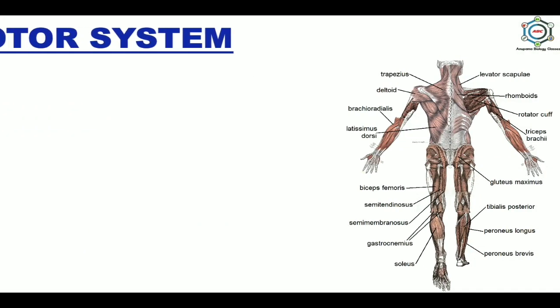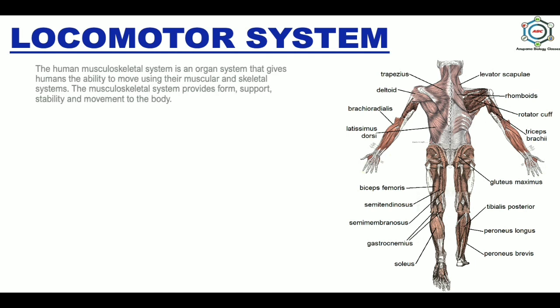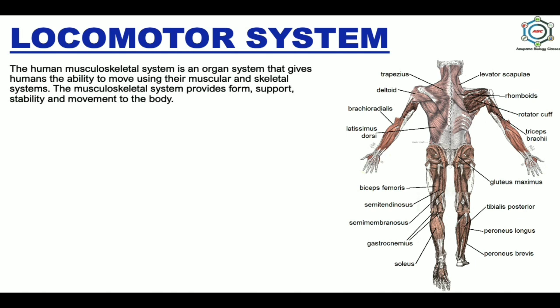Now the locomotor system, also known as the musculoskeletal system. The human musculoskeletal system is an organ system that gives humans the ability to move using their muscular and skeletal systems. The musculoskeletal system provides form, support, stability, and movement to the body.